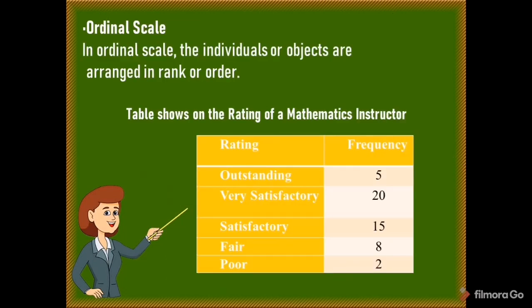The second level is the ordinal scale. In the ordinal scale, individuals or objects are arranged in rank or order. For example, a table showing the rating of a mathematics instructor with categories: outstanding, very satisfactory, satisfactory, fair, and poor.